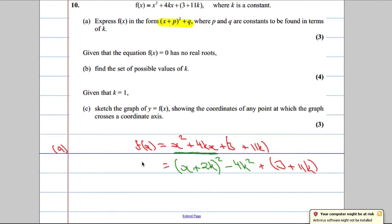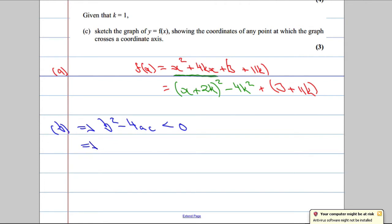The next part says, given that the equation f of x equal to 0 has no real roots, that's the important part here, we're asked to find the possible values of k. If it's no real roots, so in part b, no real roots implies b squared minus 4ac must be less than 0. So the discriminant of the function has got to be less than 0. So let's see what that works out to be. In terms of k, b is going to be 4k.